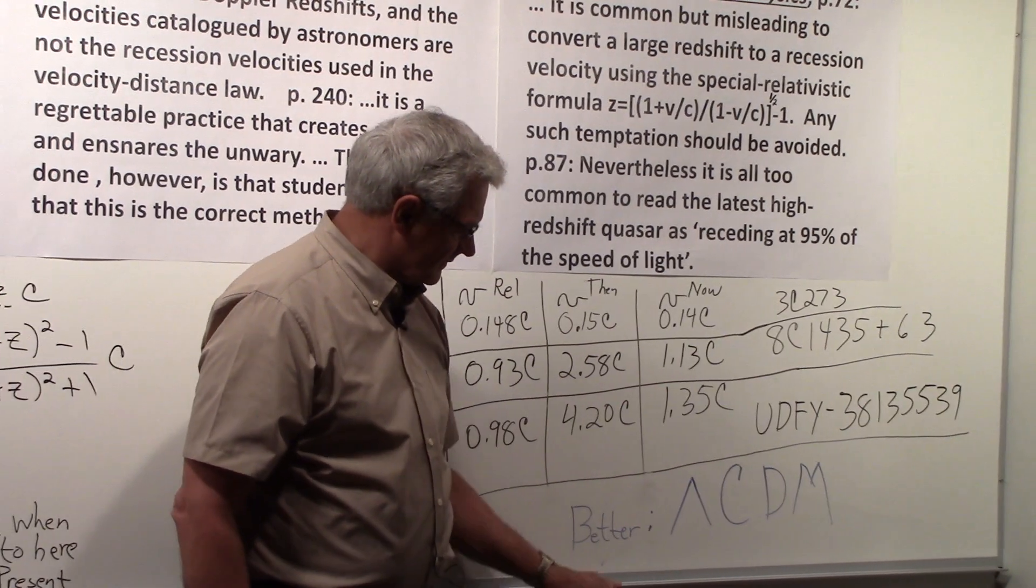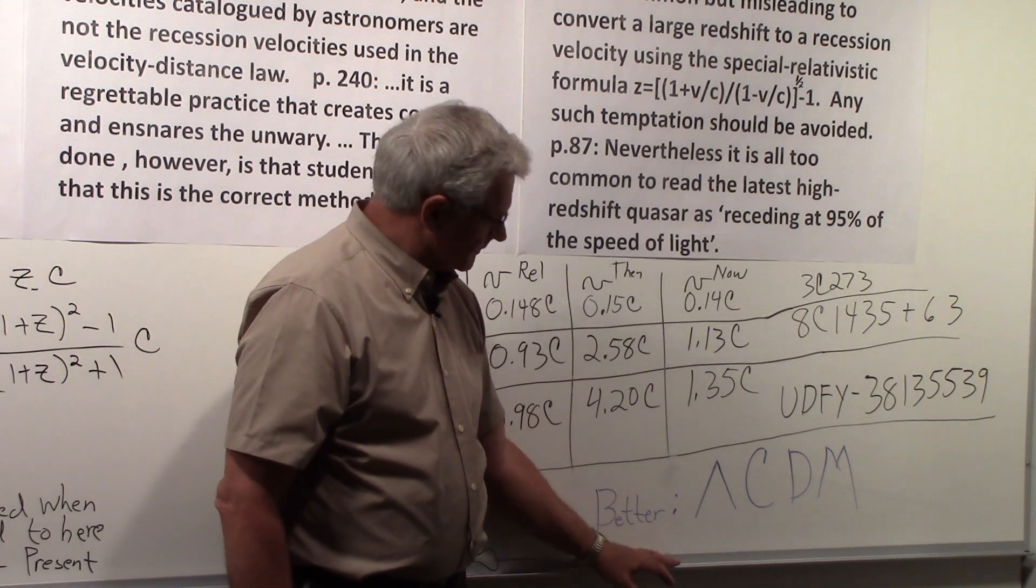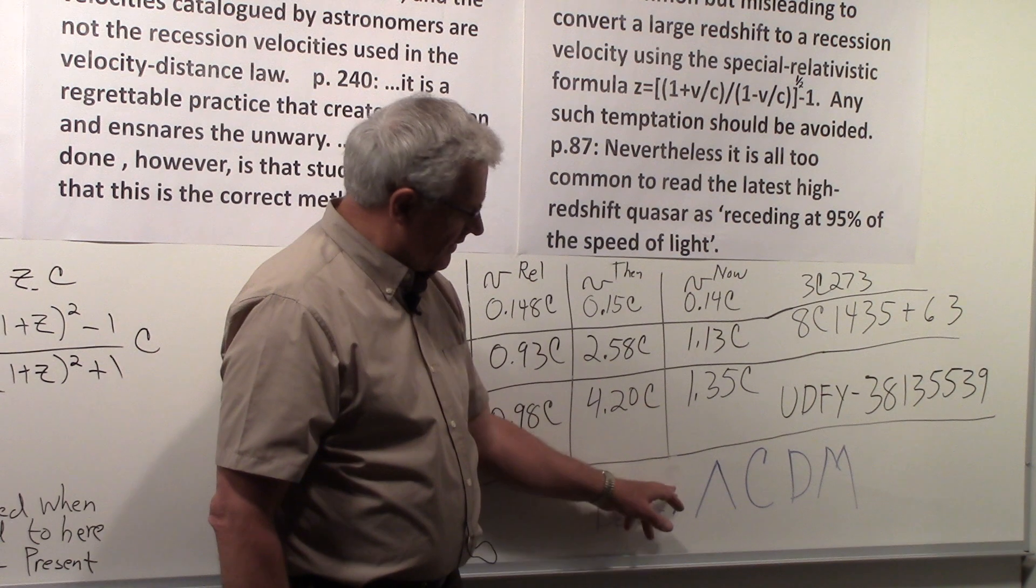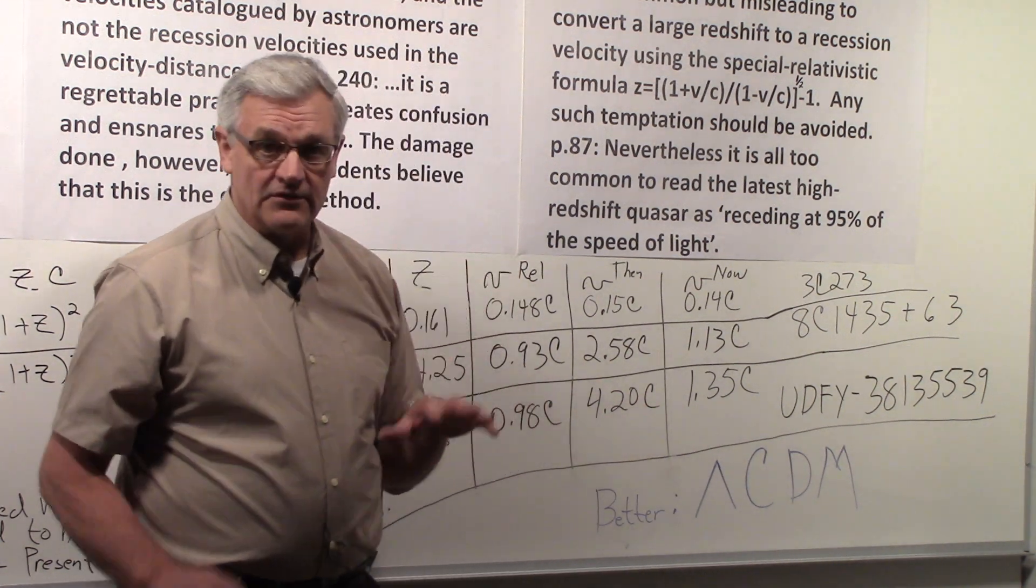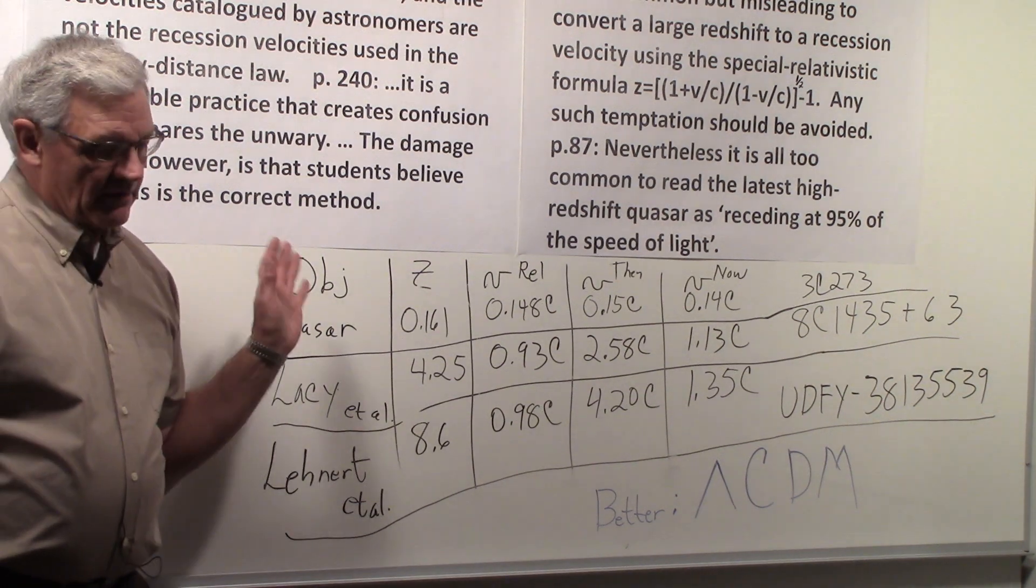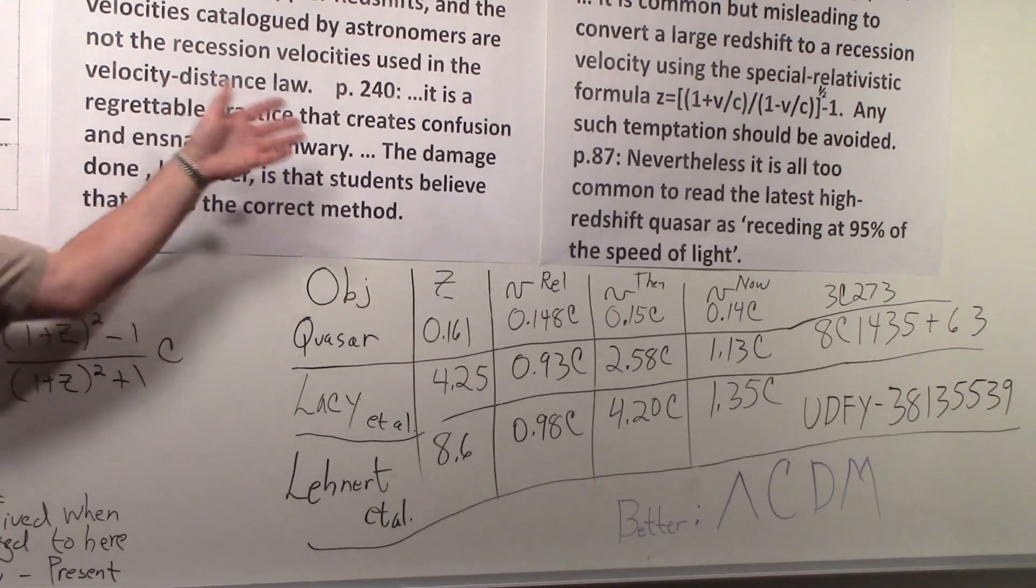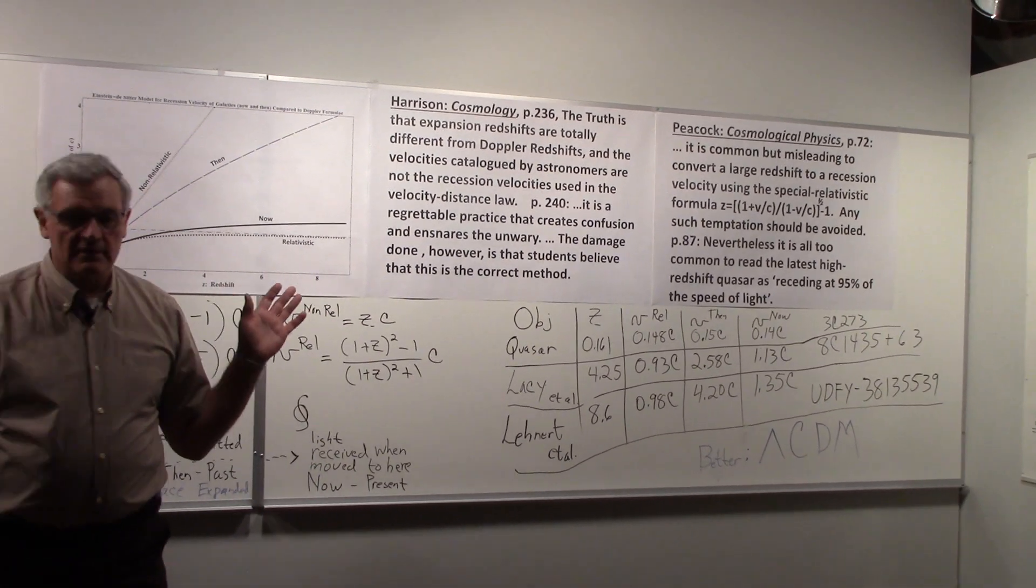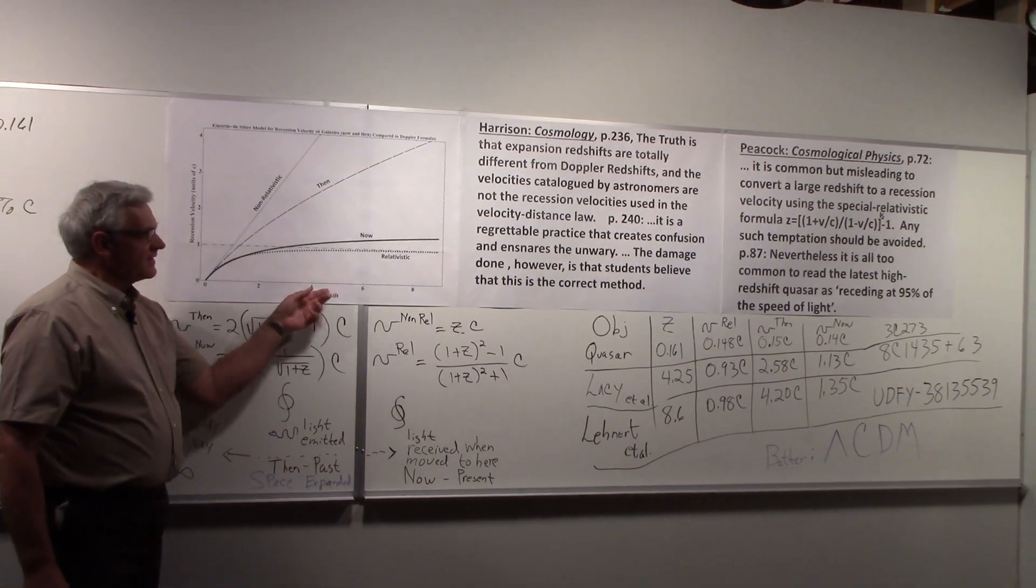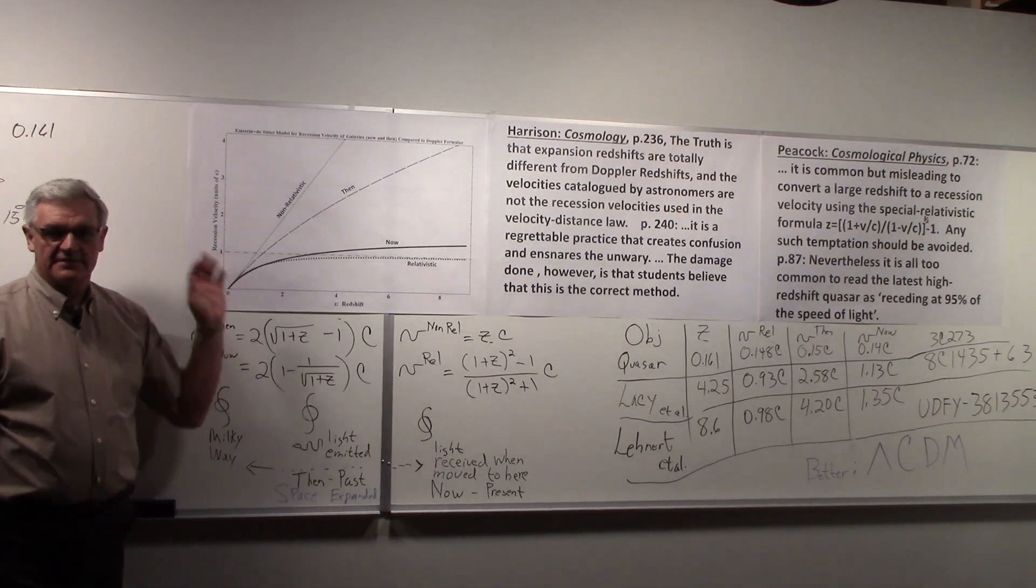There's a better model. It's called the Lambda-CDM model. The CDM stands for cold dark matter, and the lambda is the cosmological constant, which is showing that the universe is accelerating. But the general idea here is to show what's quoted here: that you cannot use the Doppler formula for large redshifts to get an accurate representation of the recession velocity of galaxies.